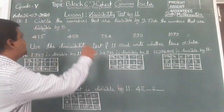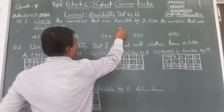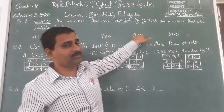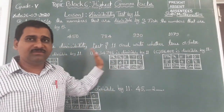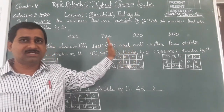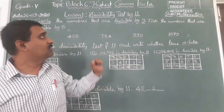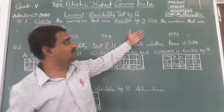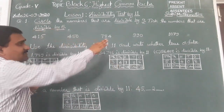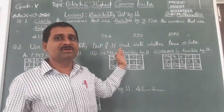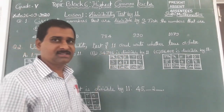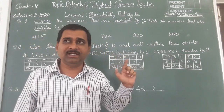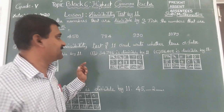We should circle the numbers which are divisible by 9. Five numbers are given. Out of these 5 numbers, some are divisible by 9 — those we should circle. Some numbers are divisible by 5 — those we should tick mark. Let us go through the table now. Recall the divisibility test table you already learnt.